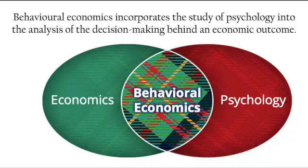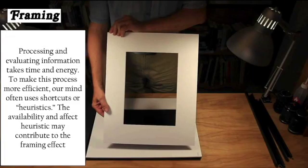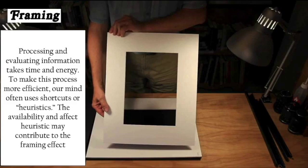This specific video is going to look at the framing effect. When an economic agent has to make a decision, they have to process and evaluate information, which can take time and energy. Often, economic agents try to make the process as quick and efficient as possible by using shortcuts or heuristics. The availability and effect of heuristics may contribute towards the framing effect.